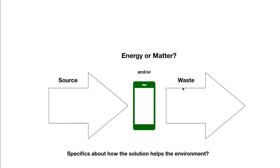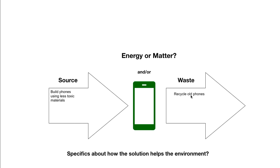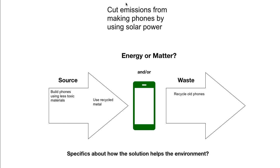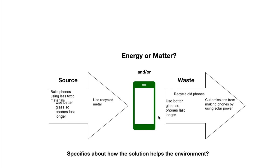There are many ways that students can make smartphones more sustainable — let's see how they fit into this diagram affecting the source or waste streams. We could build phones using less toxic materials — that's about the source of the materials. We could recycle old phones so they're not going in the landfill — that affects the waste stream. We could use recycled metal, again affecting what inputs go into the source. We could cut emissions from making phones by using solar power — that's about the waste that's produced. We could use better glass so that phones last longer, affecting the source and reducing waste. So keep this diagram in mind throughout the Culminating Experience.